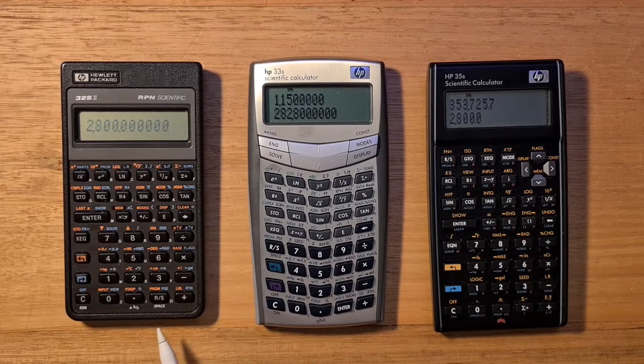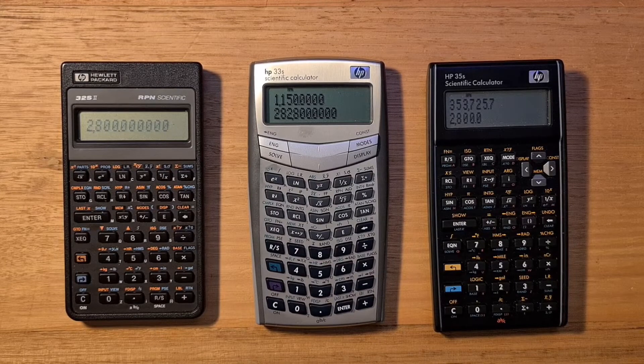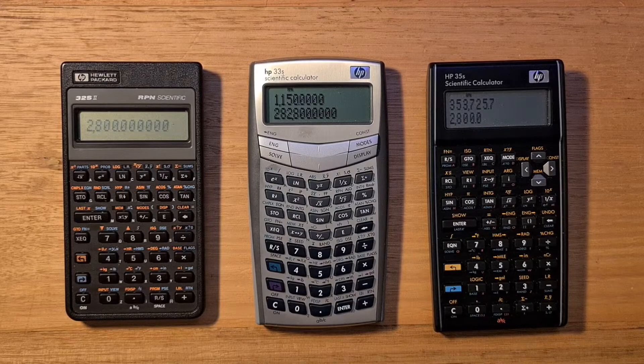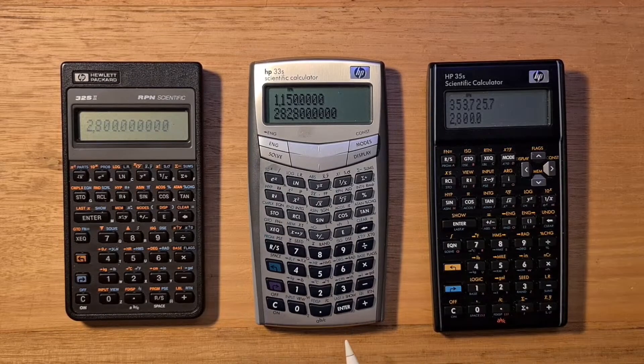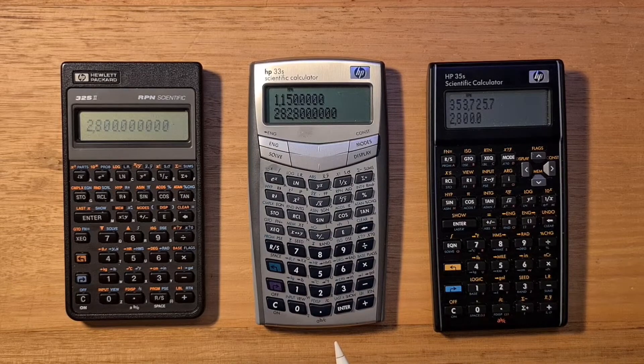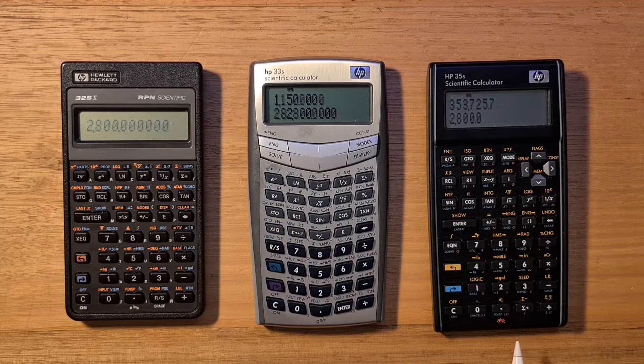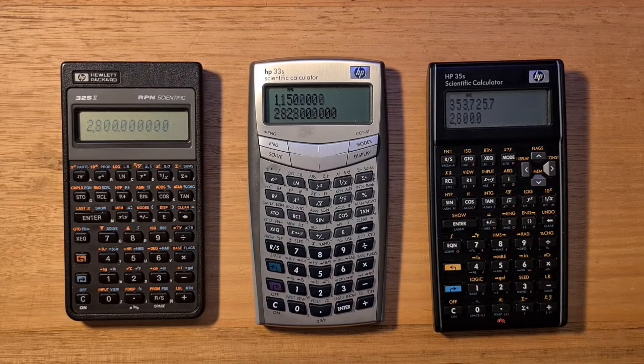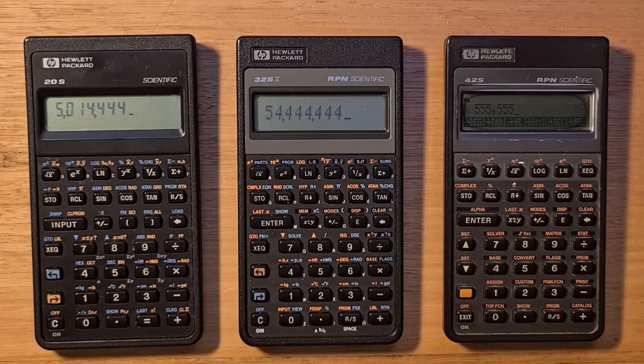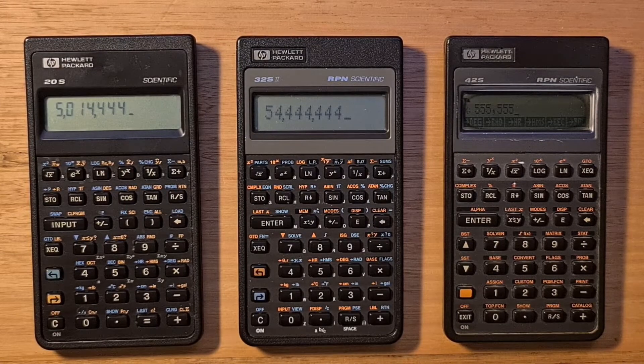The 32S2 was part of HP's Pioneer series and was released in 1991 and discontinued in 2002. The 33S, its successor, was introduced in 2003 and was discontinued on the introduction of the 35S in 2007.